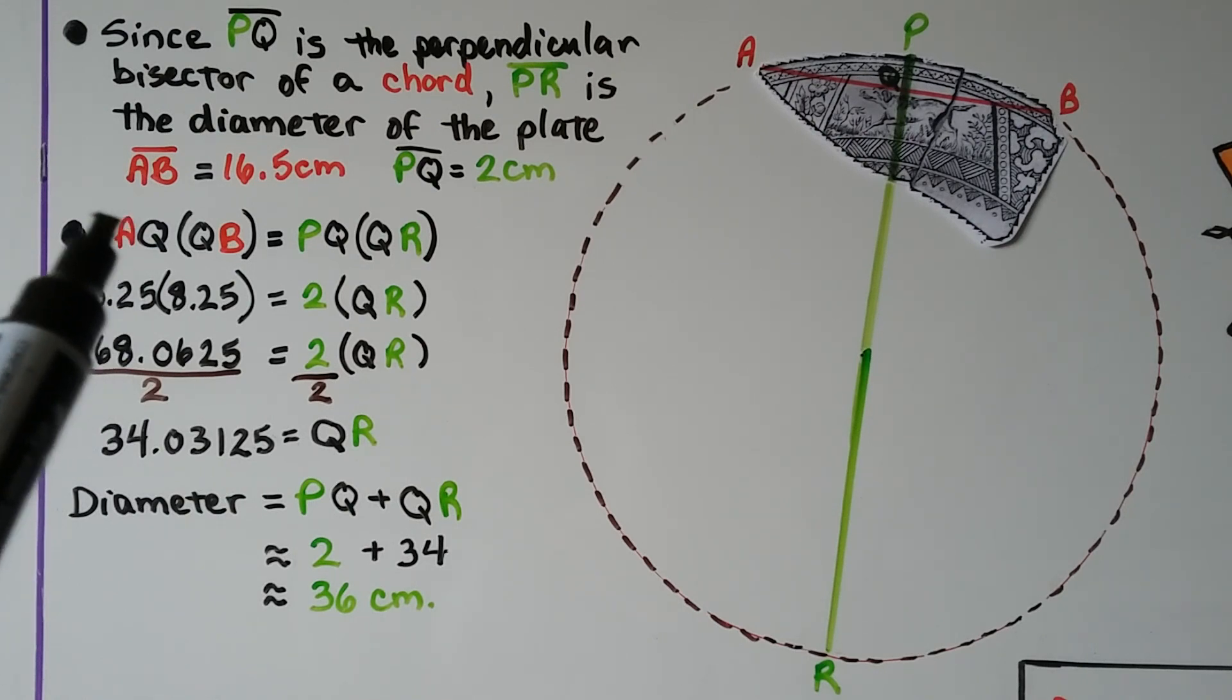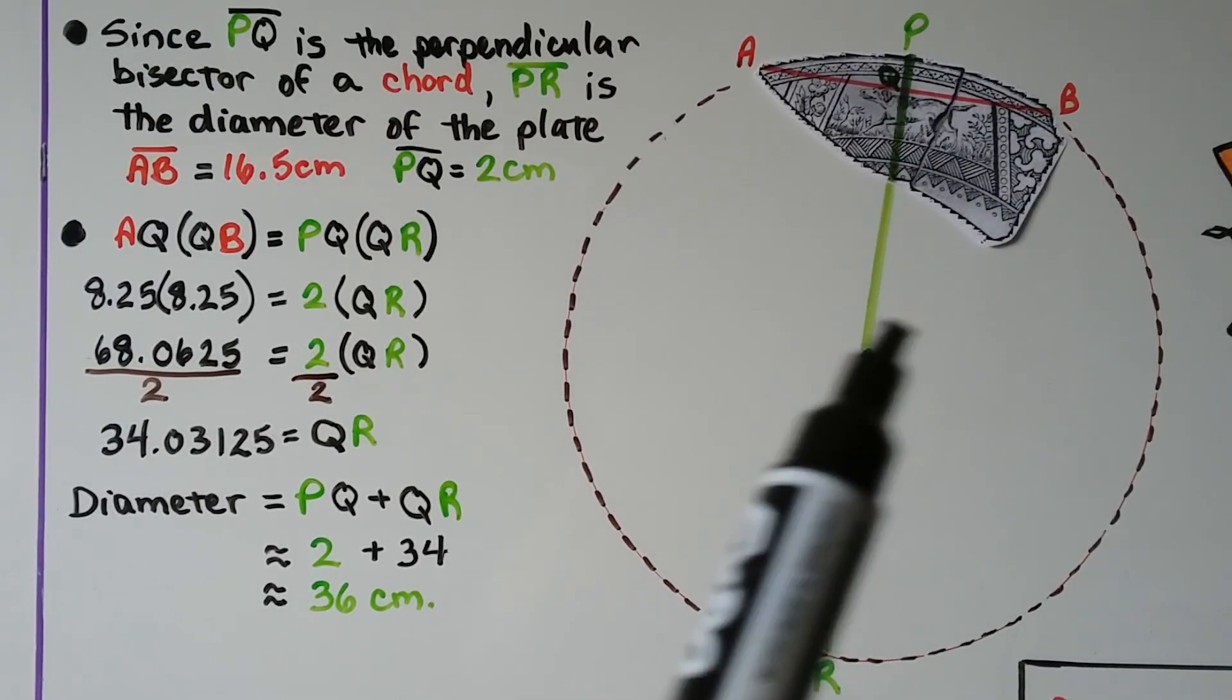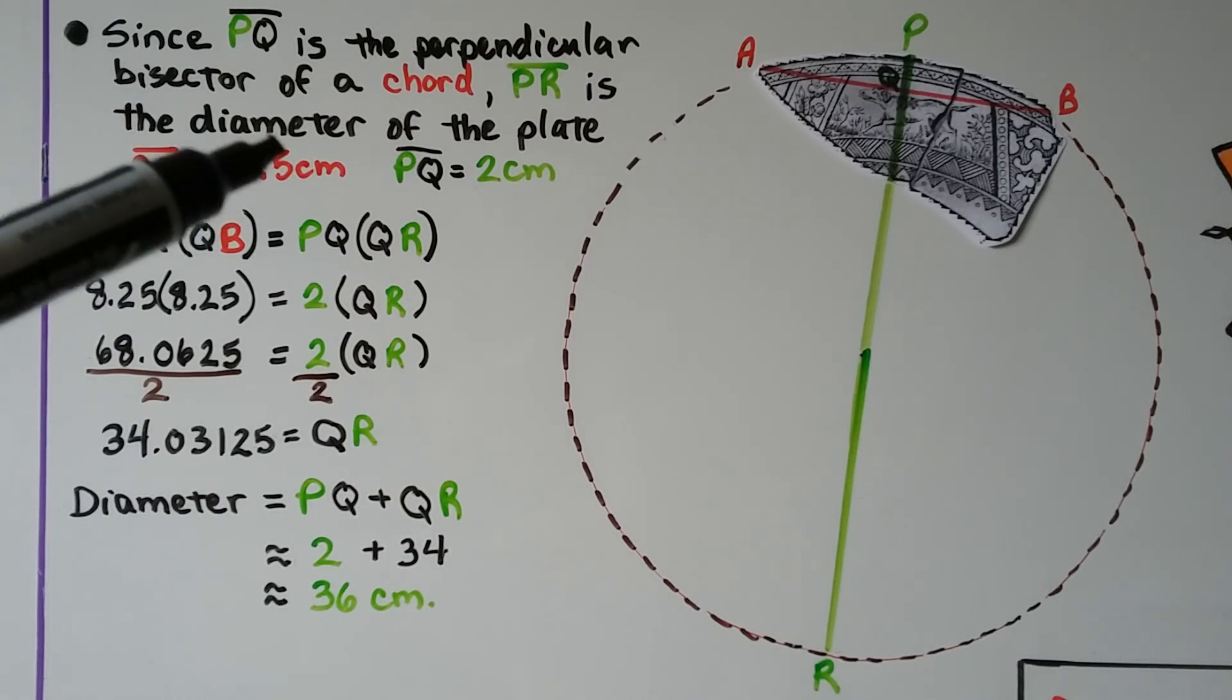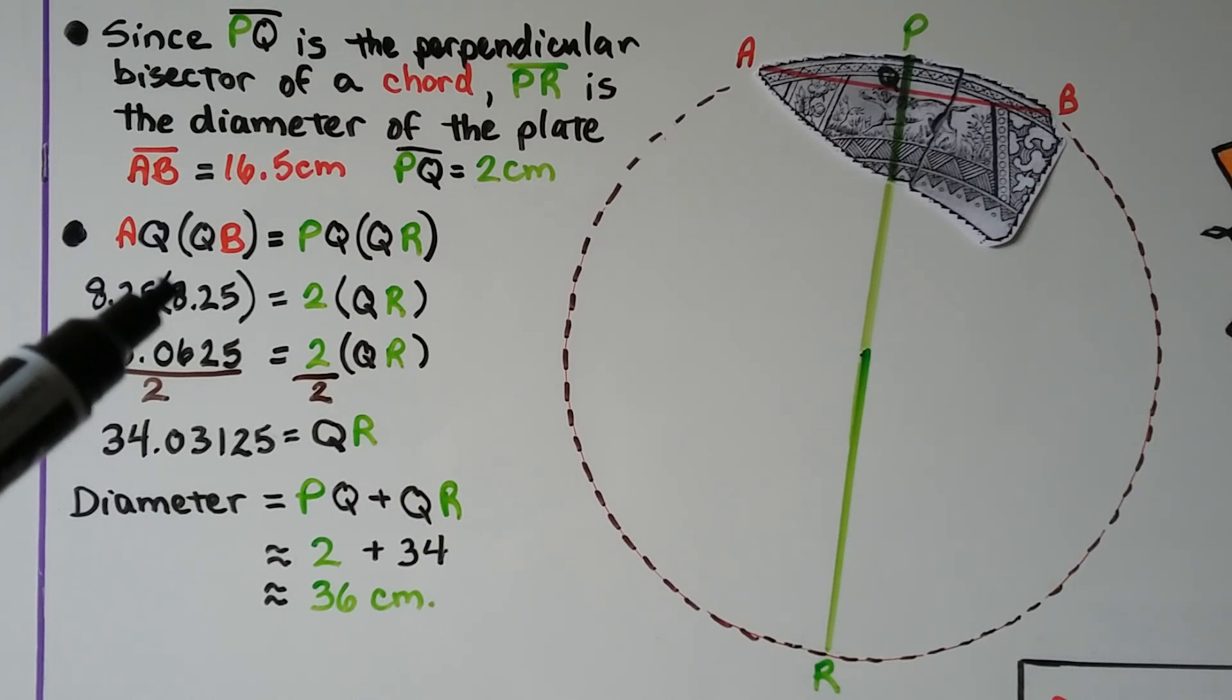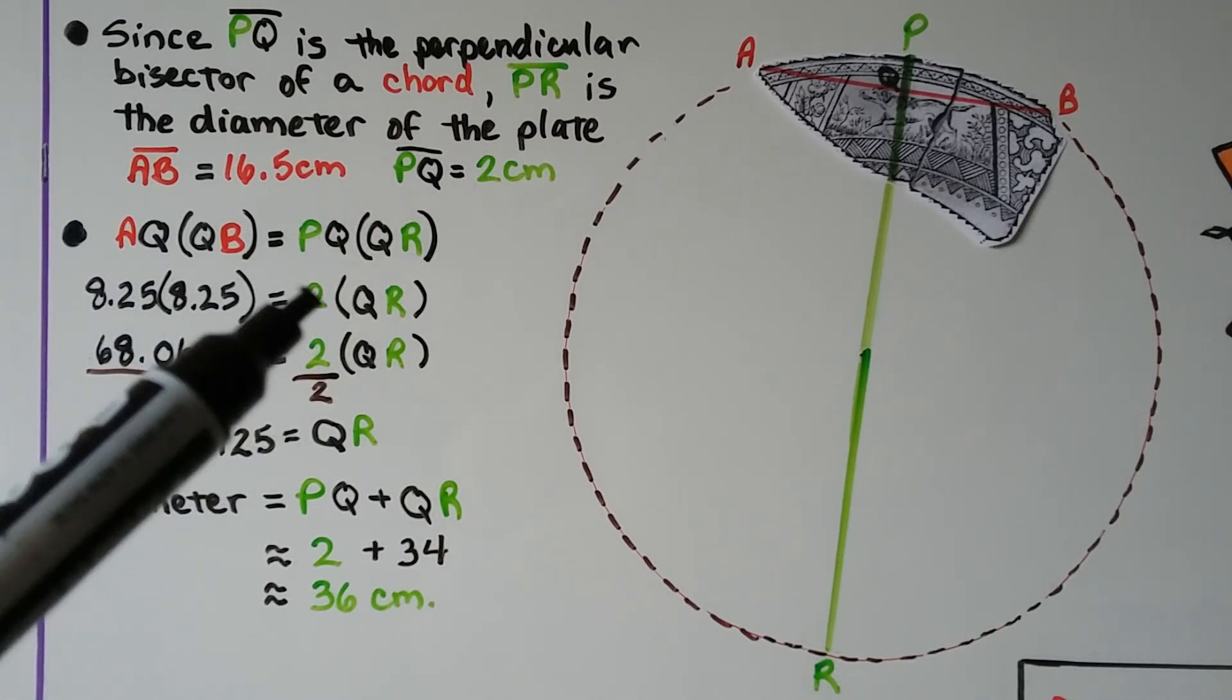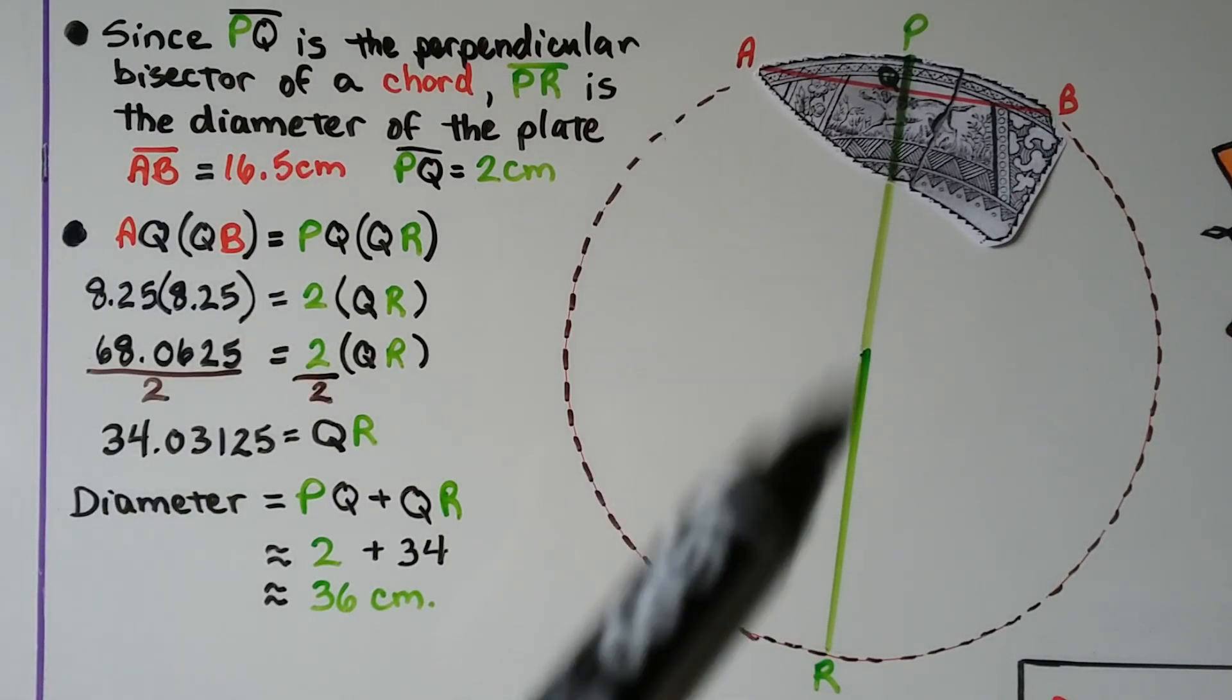We're going to use the chord-chord product theorem and do AQ times QB is equal to PQ times QR. So if AB is 16.5 centimeters, then AQ must be 8.25 and QB must be 8.25. We multiply them together and get 68.0625. PQ is 2 centimeters, so we're going to do 2 times QR.